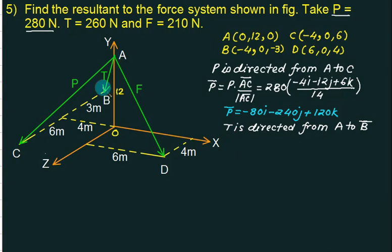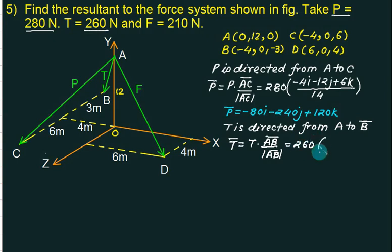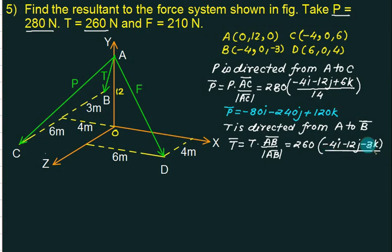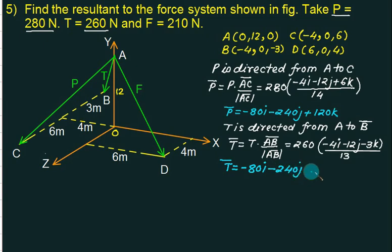Since T is directed from A to B, T-bar equals T times AB-bar upon magnitude of AB-bar. The value of T is 260. AB-bar equals B minus A gives (−4i − 12j − 3k). The magnitude is √(4² + 12² + 3²) = 13. So 260 divided by 13 is 20, giving T-bar = −80i − 240j − 60k.